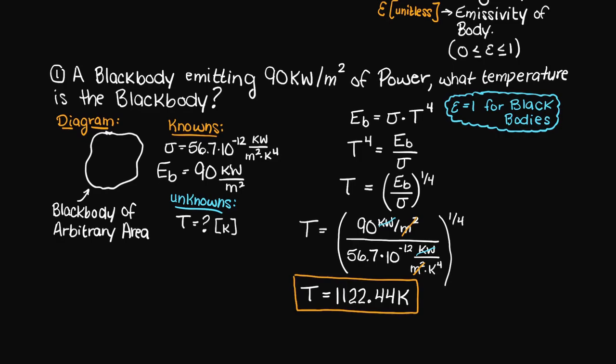So we are saying that for a black body to emit 90 kW of power per m², 90 kJ of energy per second per m², the body must be at this temperature.